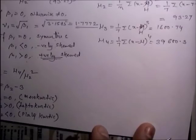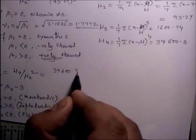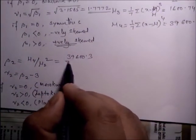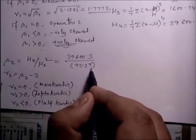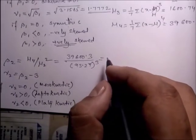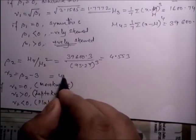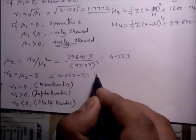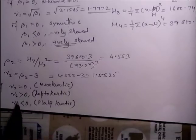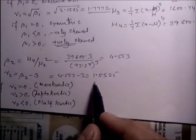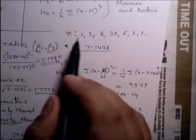Similarly, we calculate beta_2: beta_2 = mu_4 / mu_2 squared = 39600.3 / (93.27)^2 = 4.553. Gamma_2 = 4.553 minus 3 = 1.5525. Since gamma_2 is greater than 0, the distribution of this particular data is leptokurtic.